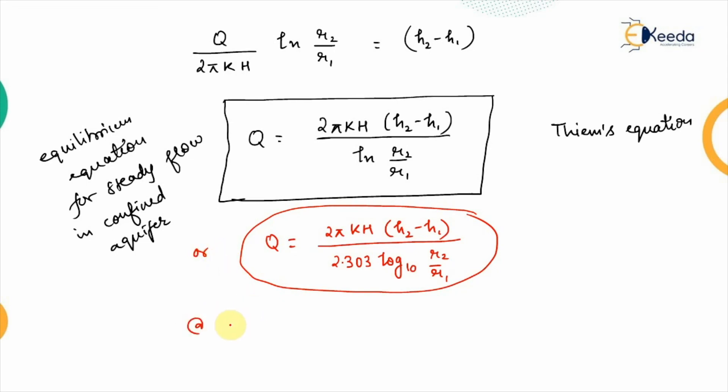So, at the edge of the zone of influence at the edge of the zone of influence the drawdown that we will be having that is 0. So, the drawdown is 0 at radius is equal to r and height of the piezometer that will be equal to capital D.